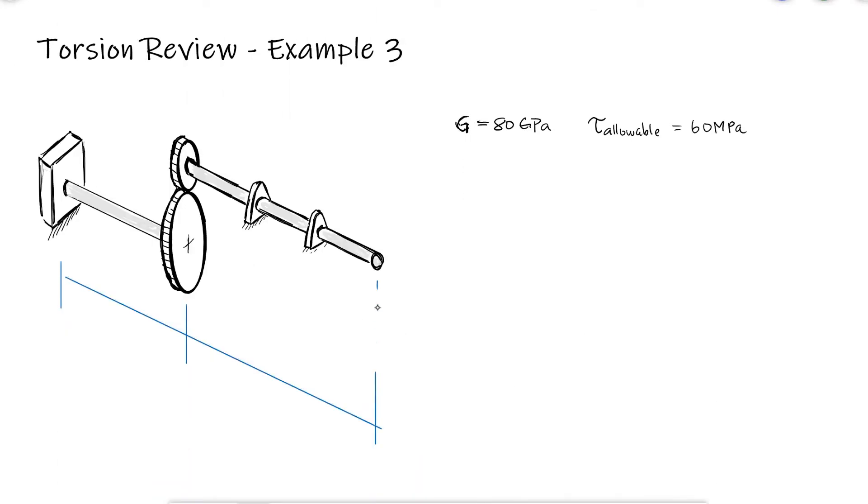If we want the angle of twist of B with respect to A to not exceed 1 degree, what should the diameter of the shaft be?